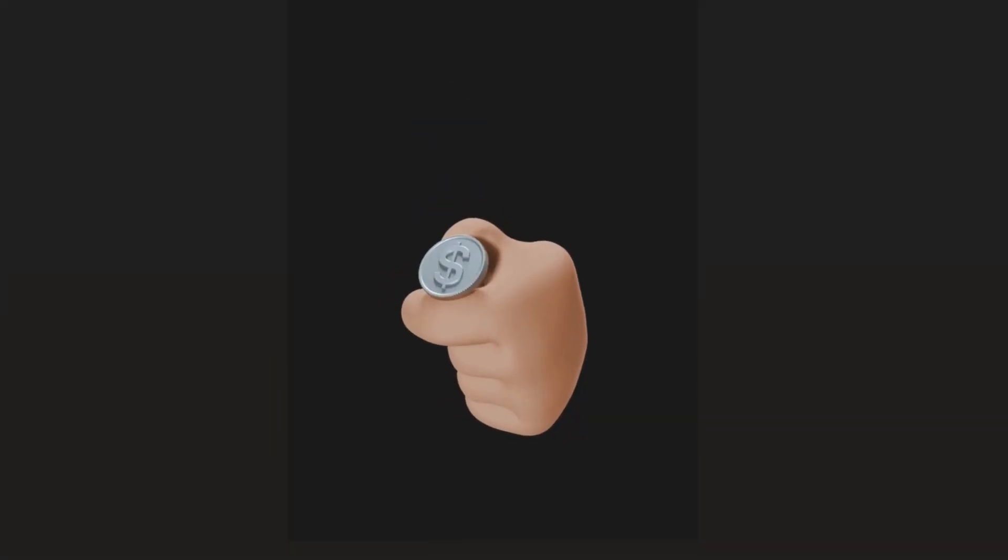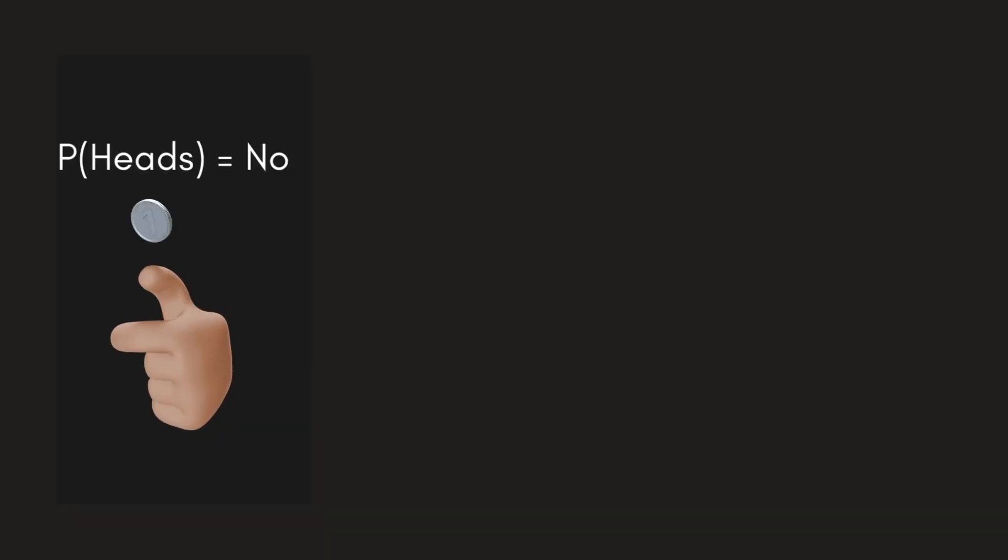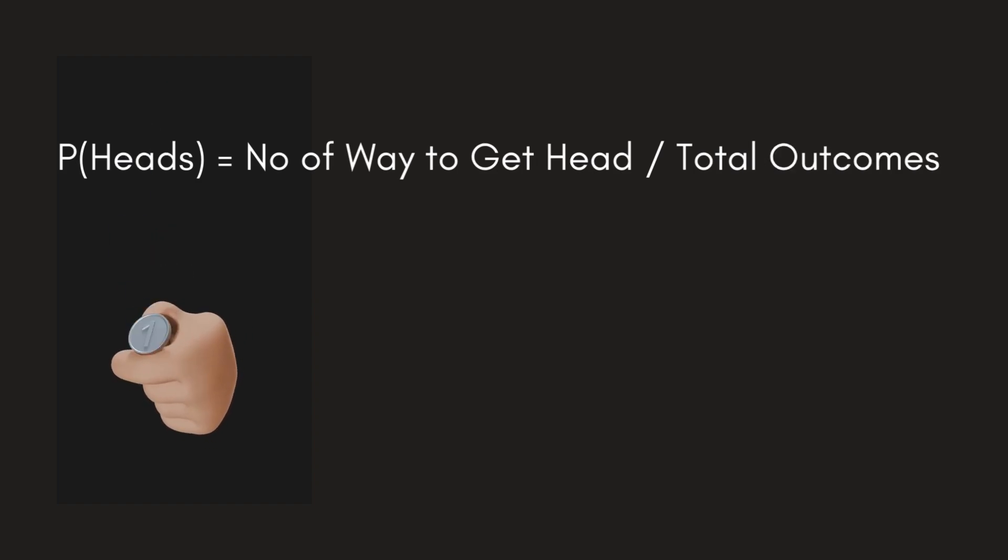Suppose you flip a coin and you want to find out the probability of getting heads. The probability of getting heads is equal to the number of ways of getting heads divided by total number of outcomes.